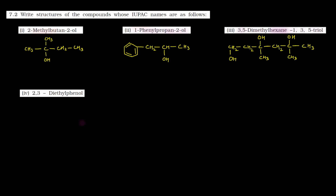Fourth part mein kya given hai — 2,3-diethyl phenol. Simple sa hai. Sabse pehle kya banayenge — yahan hum draw karenge phenol. Phenol ka matlab kya hota hai — benzene ring, aur benzene ring ke upar laga hua hai OH. Aapko kya karna hai: second aur third position par hai diethyl. Agar hum numbering karein: this is one, two and three. Second aur third position par hai ethyl groups. Toh yahan add kar denge ethyl — ethyl ka matlab CH2 CH3 — toh hum likh lete hain C2H5 aur yahan bhi C2H5. Ban gaya, 2,3-diethyl phenol.